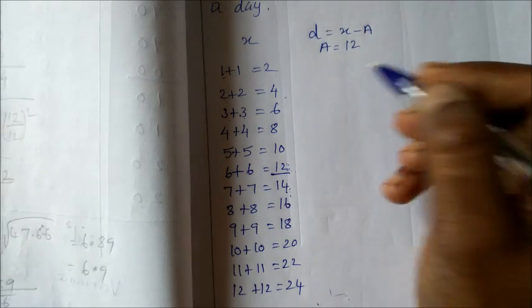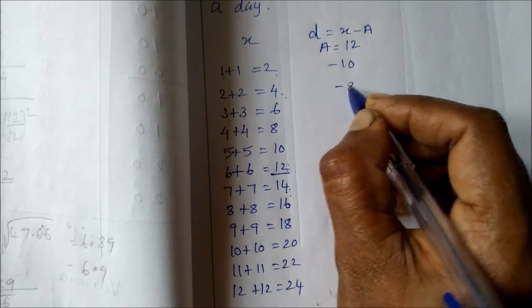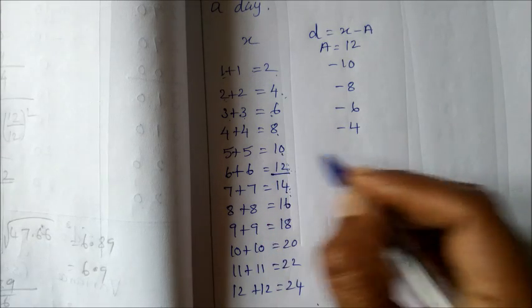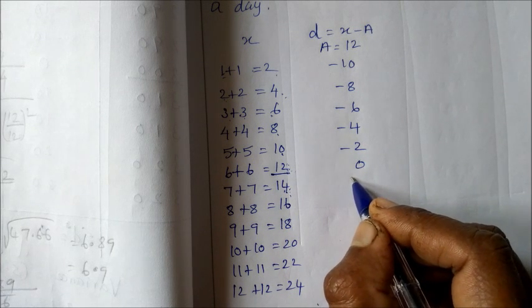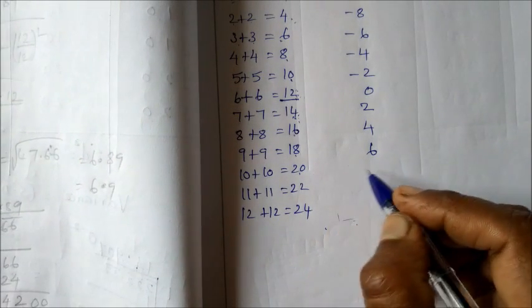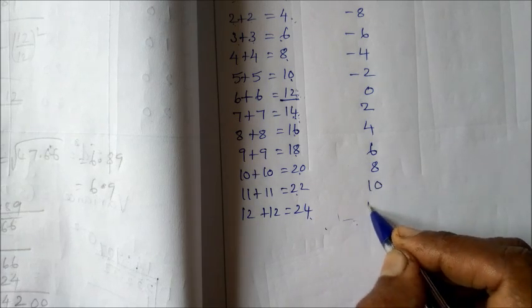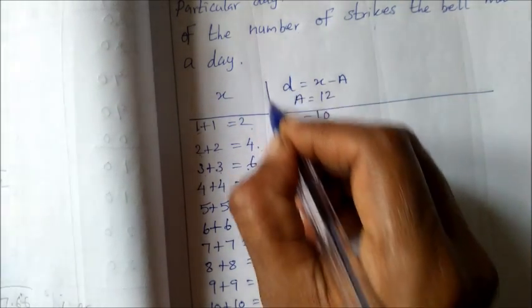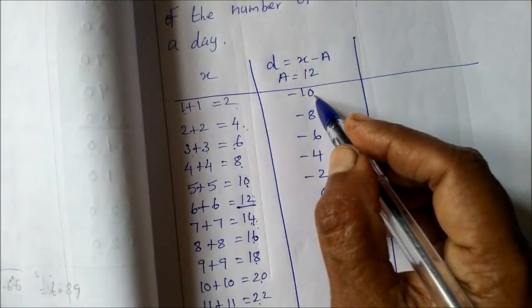So a is 12. Then 2 minus 12 is minus 10, 4 minus 12 is minus 8, 6 minus 12 is minus 6, 8 minus 12 is minus 4, 10 minus 12 is minus 2, 12 minus 12 is 0, 14 minus 12 is 2, 16 minus 12 is 4, 18 minus 12 is 6, 20 minus 12 is 8, 22 minus 12 is 10, 24 minus 12 is 12.